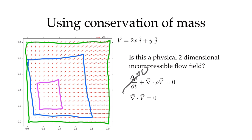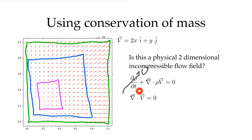So it cannot be a physically meaningful incompressible flow field — it does not conserve mass. Somehow mass is being created in this box: it's leaving the box but never coming in. So we can say using conservation of mass that this is not a physical two-dimensional incompressible flow field. We need it to satisfy conservation of mass to be physical.